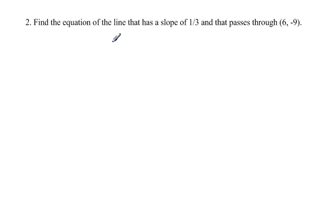Find an equation of a line that has a slope of one-third, passes through 6 negative 9. So again, y equals one-third x plus b.